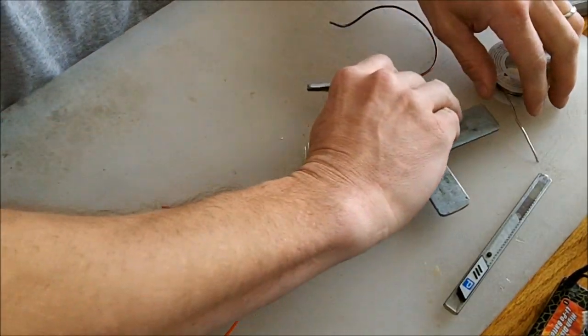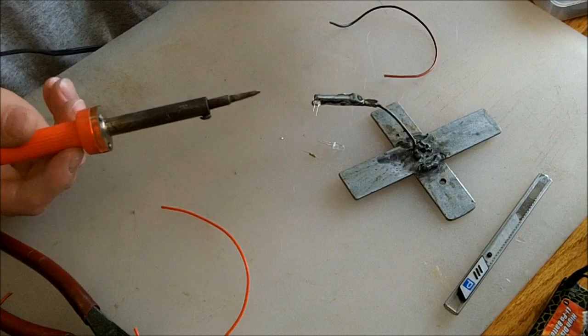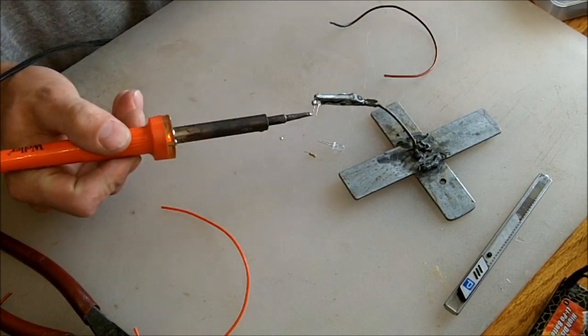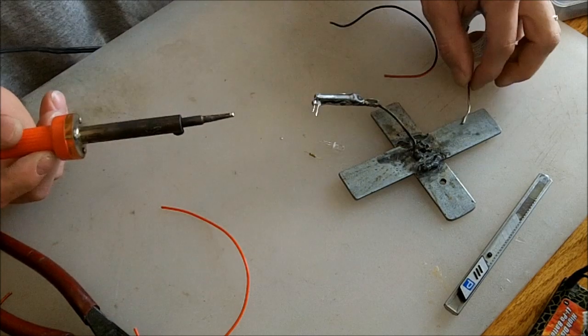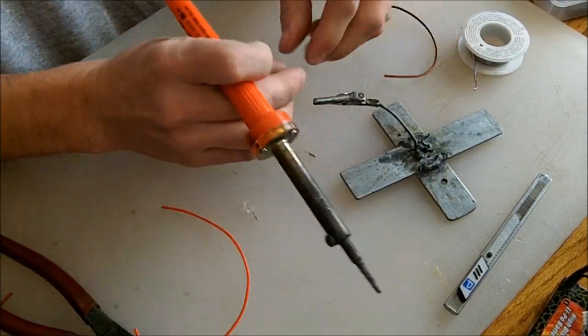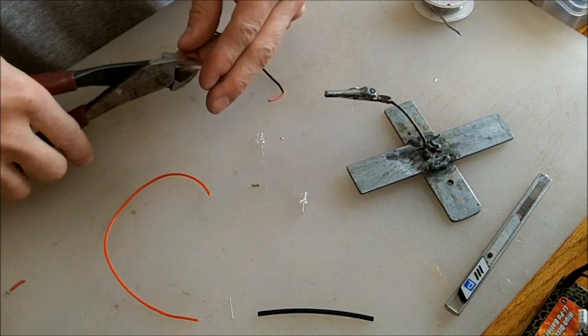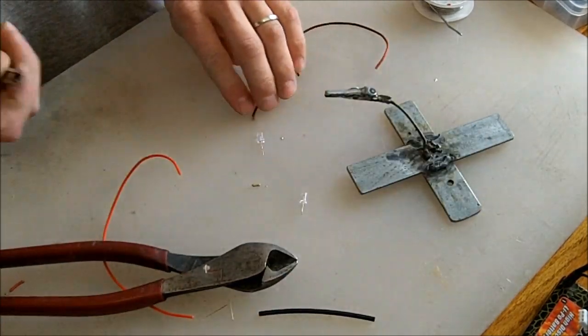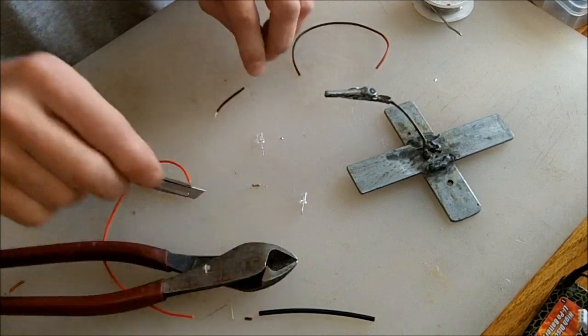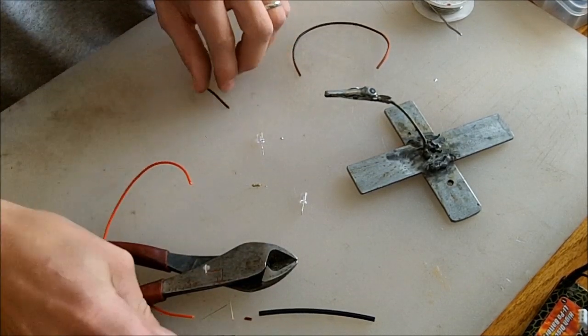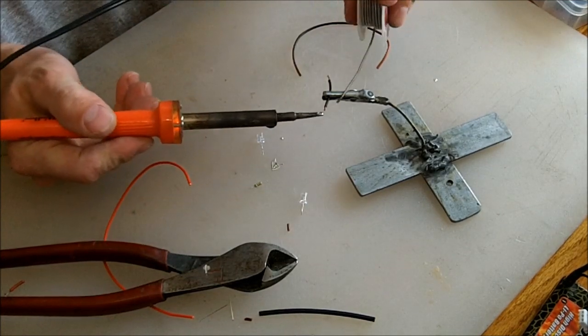Bring in my homemade alligator claw that I made. We're going to start off by pre, I believe this is called tinning. Don't quote me on that. And all we're going to do is just put a light coat of solder on each one of your lights. I'm going to take a little piece of wire, bear the wire.